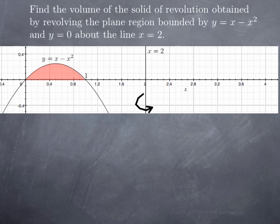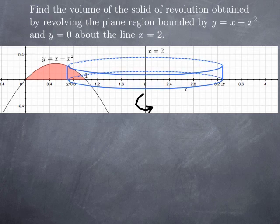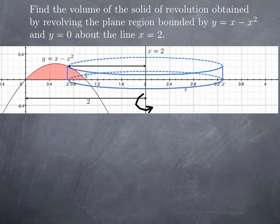If we're going to use cylindrical shells, for any x between 0 and 1 we look at the corresponding line segment for x equals constant in the region we rotate, and we rotate this line segment about the axis of revolution x equals 2, generating a cylindrical shell. To apply our formula, what we need to know about that cylinder is its height and radius. The height is the value of the function x minus x squared at x. For the radius, we have to be more careful: the distance from x equals 0 to x equals 2 is 2, and the distance from 0 to x is x, therefore the radius is 2 minus x.